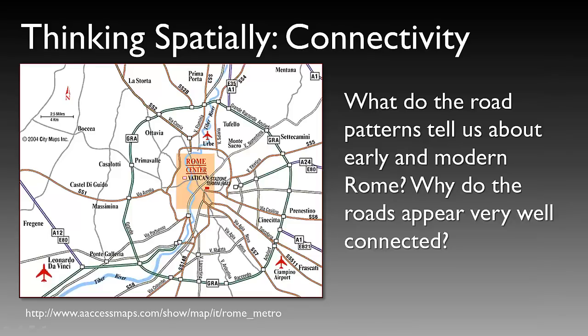Another example is connectivity. We can look at how things are connected, which we do often when using GIS and geospatial tools. In this example, what do the road patterns tell us about early and modern Rome? Looking at that map, the pattern of the roads — the network — appears quite well connected. This reflects the old saying that all roads lead to Rome. You can see spatial connectivity; the idea was to get goods and services into Rome.